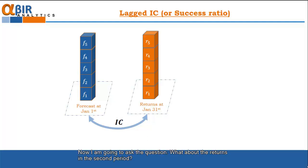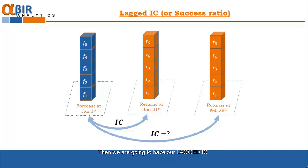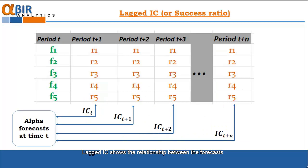Now I'm going to ask the question, what about the returns in the second period? In this case, the February returns. If we measure the correlation between our initial forecast and the returns in the second period, then we're going to have our lagged IC. The lagged IC shows the relationship between the forecast and the return vector on some later period and we call it lag because the factor is lagged an n number of times in relation to the returns.